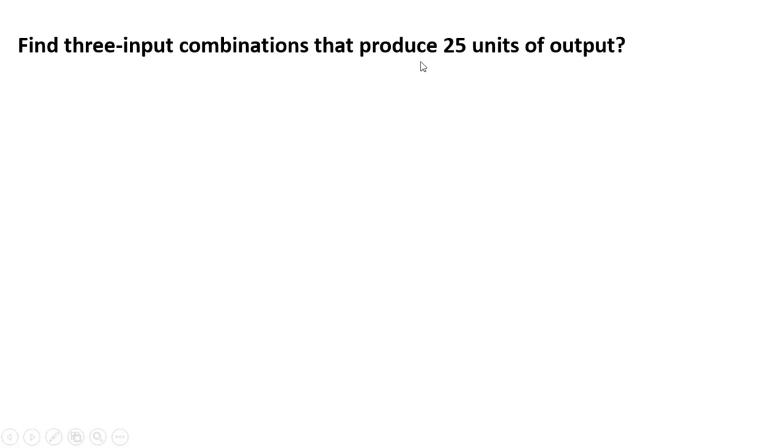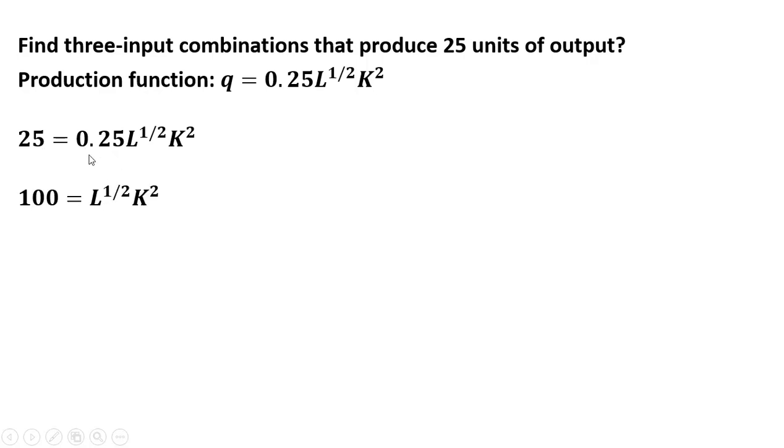Let's find three input combinations that produce 25 units of output. Here's our production function. I'm going to set q equal to 25. As before, I'm going to solve for K. So dividing through by 0.25, 25 divided by 0.25 is now 100. I'm going to divide through now by the square root of L. So we get K squared equals 100 divided by L to the 1 half power. Then I'm going to take the square root of both sides, or raise both sides to the 1 half power. On the left-hand side, we just get K. 100 raised to the 1 half power, the square root, is just 10. And then L to the 1 half now becomes L to the 1 fourth power.